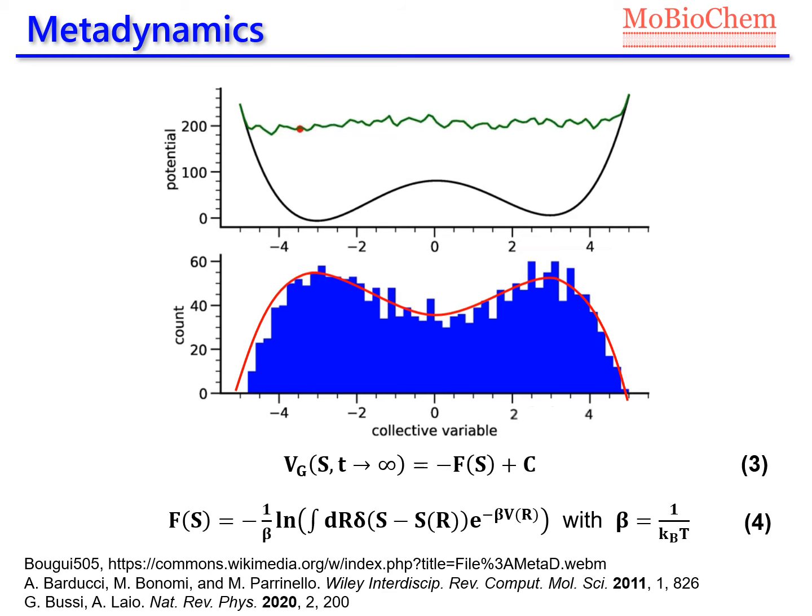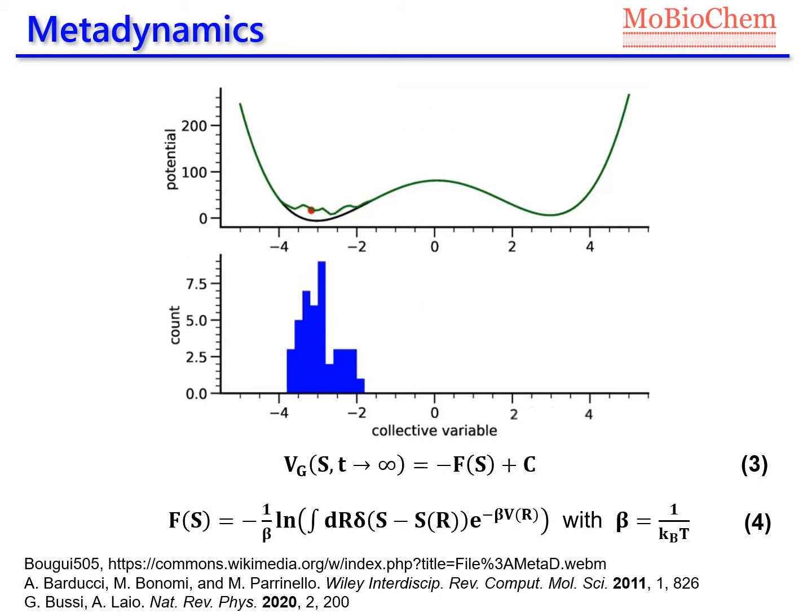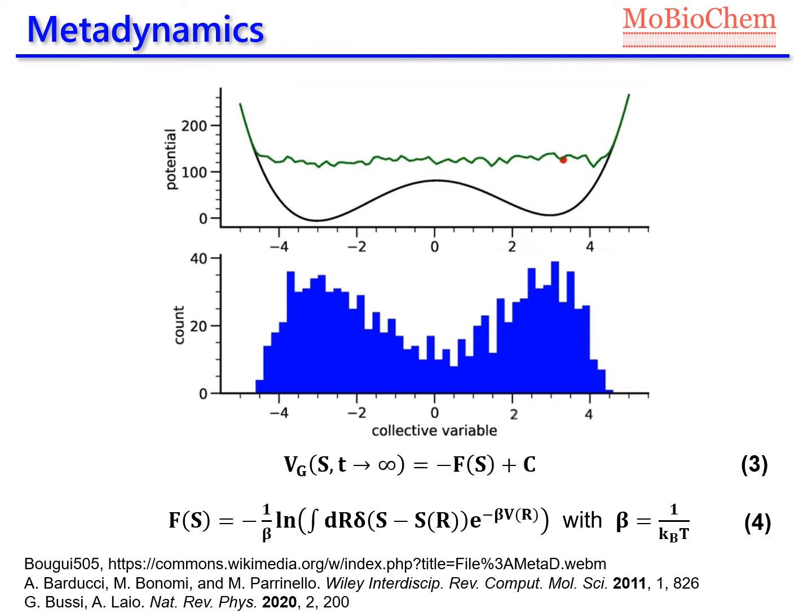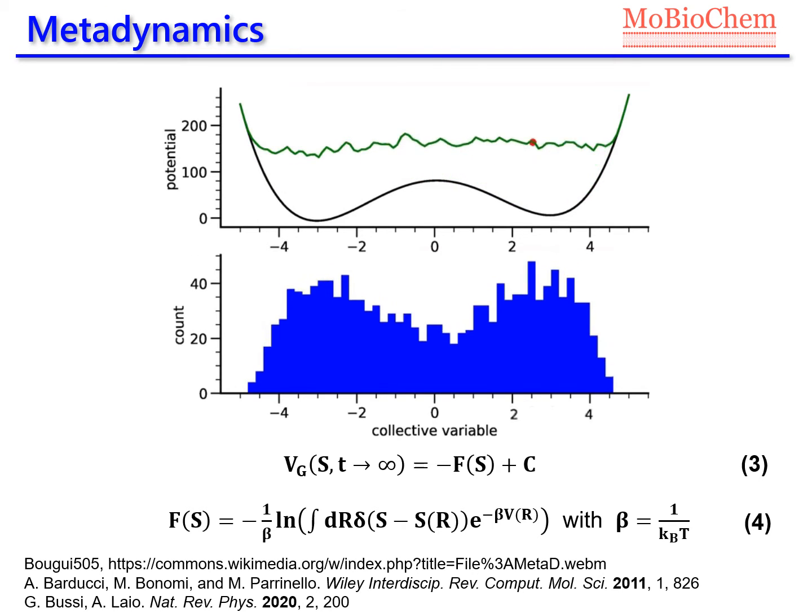Although this is just a qualitative demonstration, part of the details can be found in the first reference here. However, if we focus again in the evolution of the histogram, it is possible to observe that it presents jumps, which means that it doesn't converge smoothly to the free energy surface, and so the bias potential oscillates.